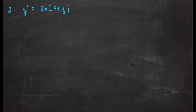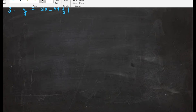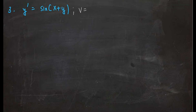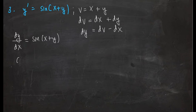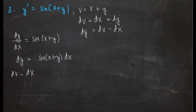Problem number 3: y' = sin(x + y). The obvious substitution is v = x + y. Then dv = dx + dy, so dy = dv - dx. Substituting into dy = sin(x + y)dx gives dv - dx = sin(v)dx.